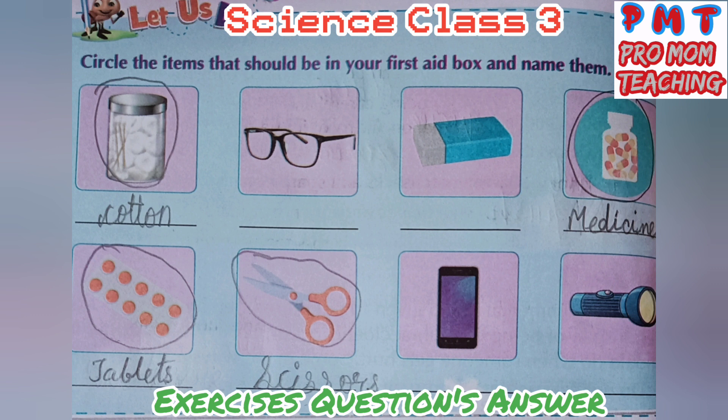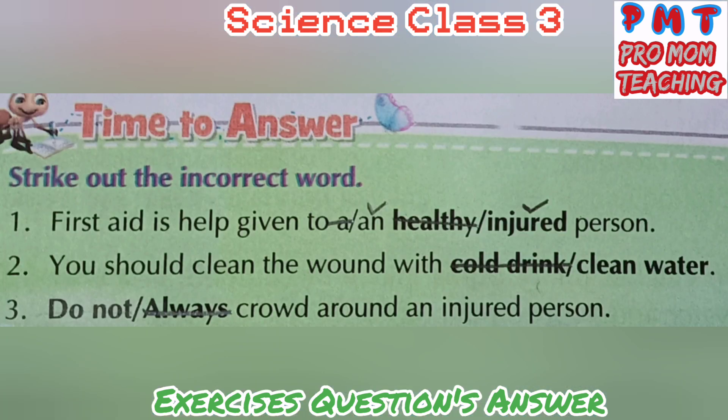Circle the items that should be in your first aid box and name them. First one is cotton: C-O-T-T-O-N. Second, medicine: M-E-D-I-C-I-N-E. Third, tablets: T-A-B-L-E-T-S. Scissors: S-C-I-S-S-O-R-S. Strike out the incorrect word.